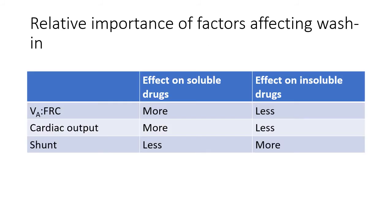We will now discuss the relative importance of some of the factors affecting the rate of inhalation or wash-in. Specifically, the presence of right-to-left shunt reduces the rate of wash-in of poorly soluble drugs like desflurane more so than soluble drugs like halothane. On the other hand, reduction in minute ventilation or an increase in cardiac output will slow the wash-in of soluble drugs more so than insoluble drugs.